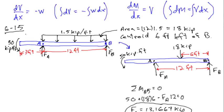I'd like to solve 6-15 using the calculus relationships between the shear force, the distributed load, and the bending moment. The slope of V versus X is equal to the negative of the value of W. The integral form says the change in the shear force equals the negative of the area under the W versus X curve. The slope of M versus X equals the shear force V, and the change in bending moment equals the area under the V versus X graph.